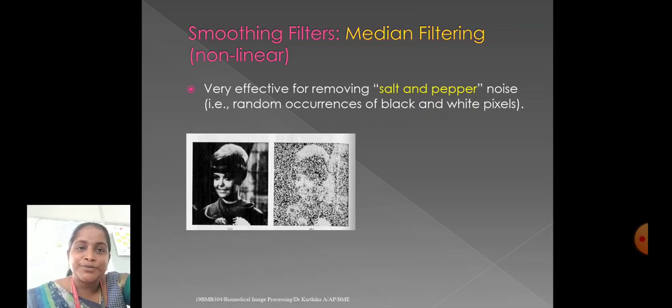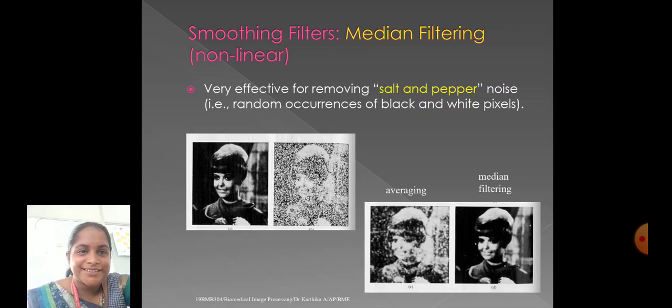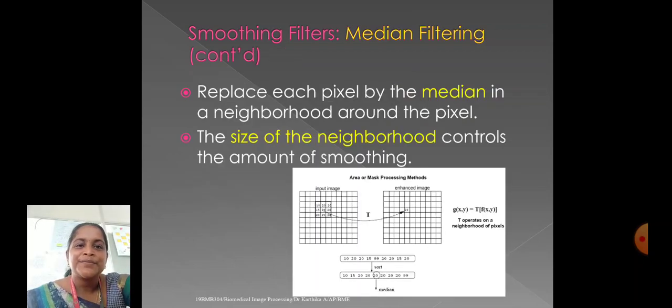In smoothing filters, we have non-linear. In non-linear, we have median filtering. They're very effective for removing salt and pepper noise. After averaging, we can get the exact input image, the exact original image by using median filtering. In median filtering, it replaces each pixel by a median in a neighborhood around the pixel. The size of the neighborhood controls the amount of smoothing.